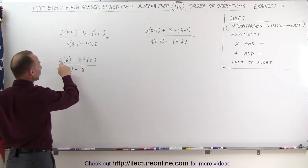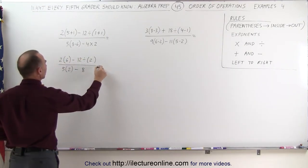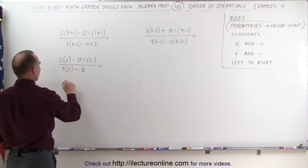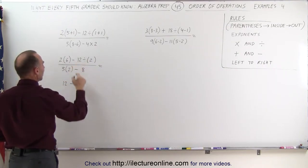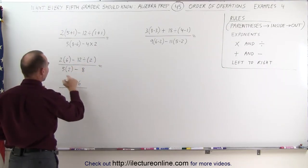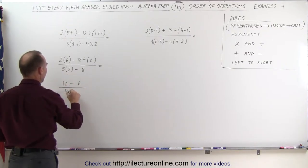Now we can get rid of the parentheses by doing the multiplication and division. This is equal to 12 minus 12 divided by 2 is 6, divided by 5 times 2 is 10, minus 8.